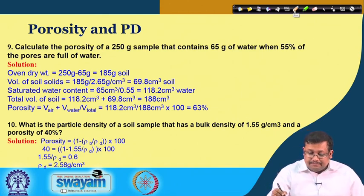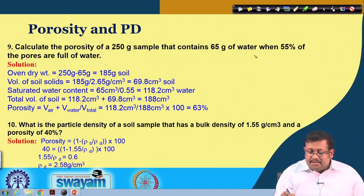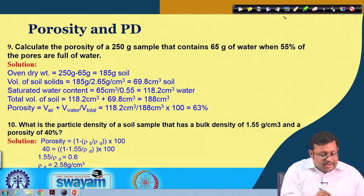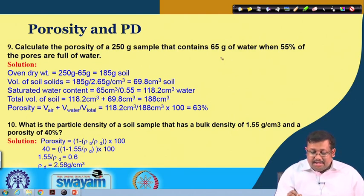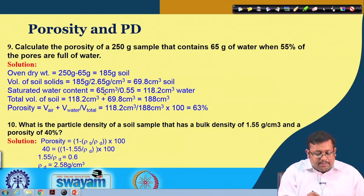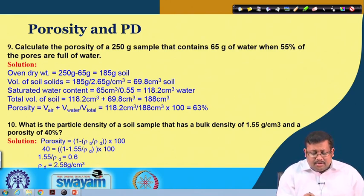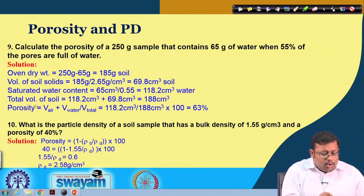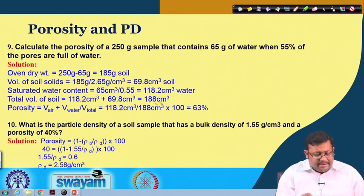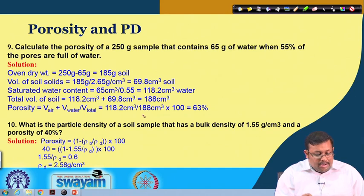Problem 9: calculate the porosity of a 250-gram sample that contains 65 grams of water when 55 percent of the pores are filled with water. Oven-dry weight equals 250 minus 65 equals 185 grams. Volume of soil solids equals 185 over 2.65 equals 69.8 cubic centimeters. Saturated water content equals 65 over 0.55 equals 118.2 cubic centimeters. Total volume equals 118.2 plus 69.8 equals 188 cubic centimeters. Porosity equals 118.2 over 188, giving 63 percent.